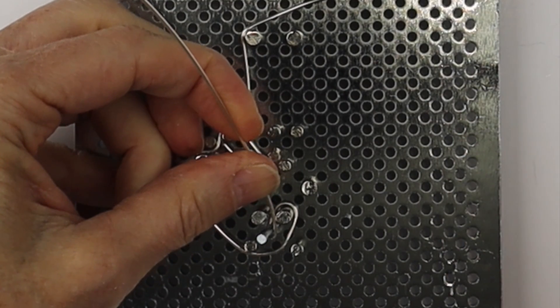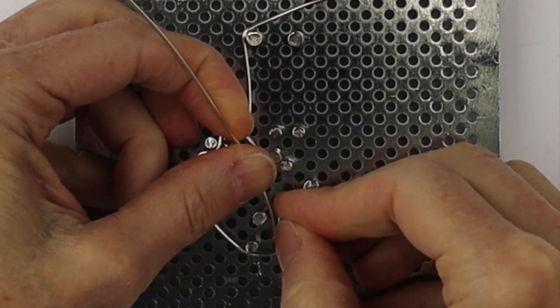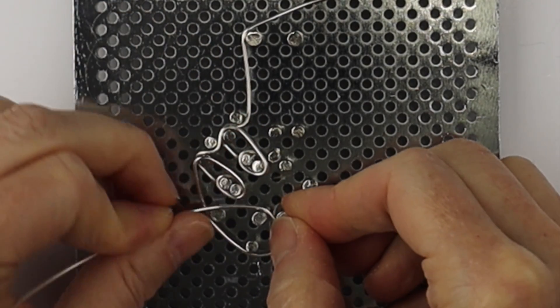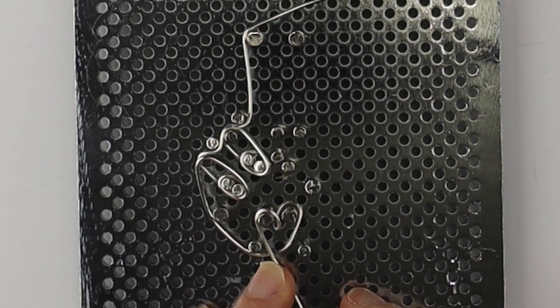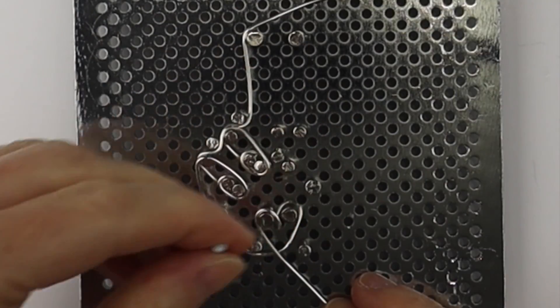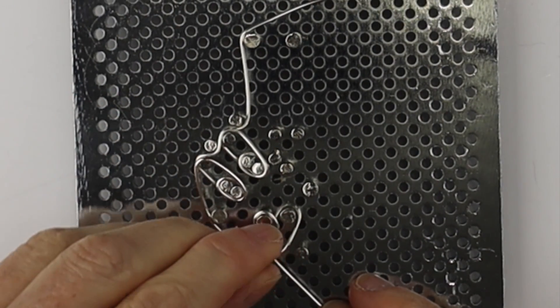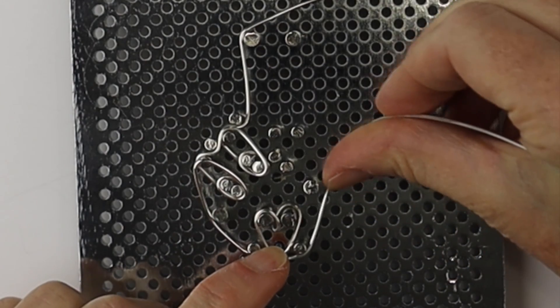So we're just going to do a little loop there, bring it around to this second peg and form the other half of the heart. So bring it right around. And once you've formed the heart, we're going to put the nail back and bring the wire straight across to the other side of the hand.